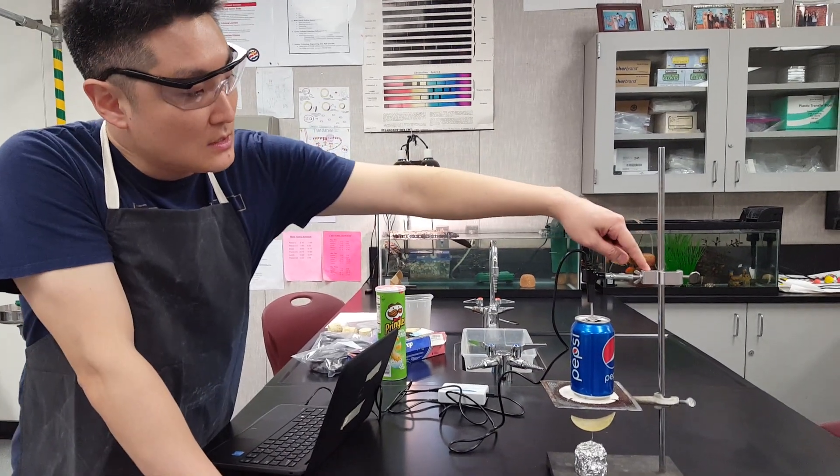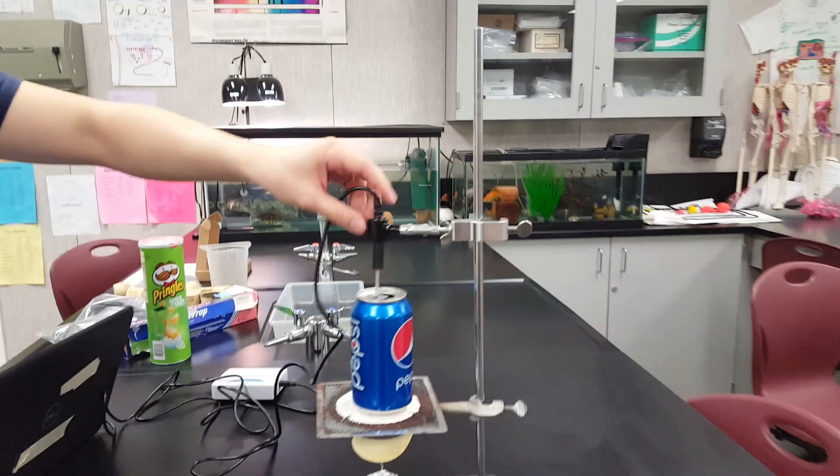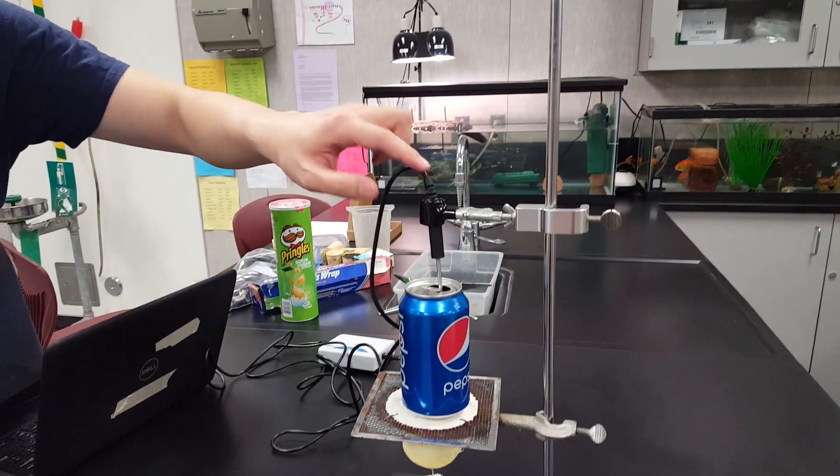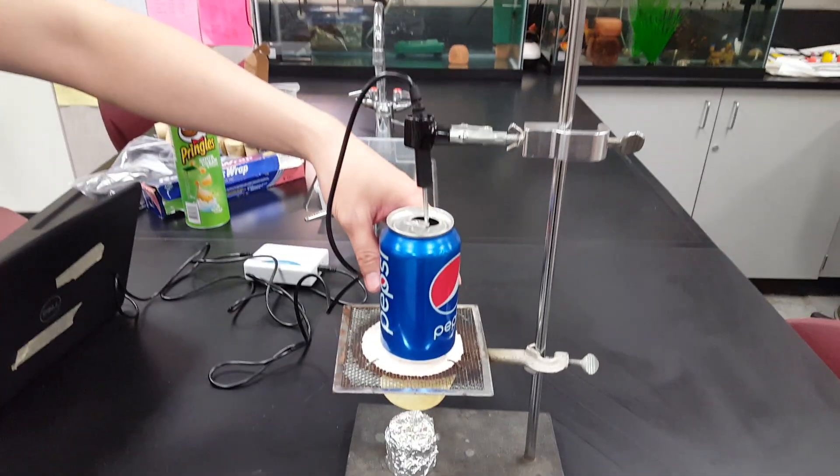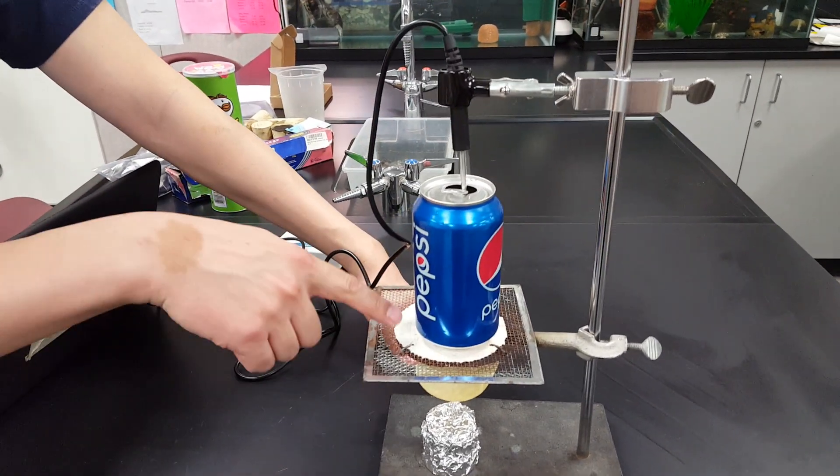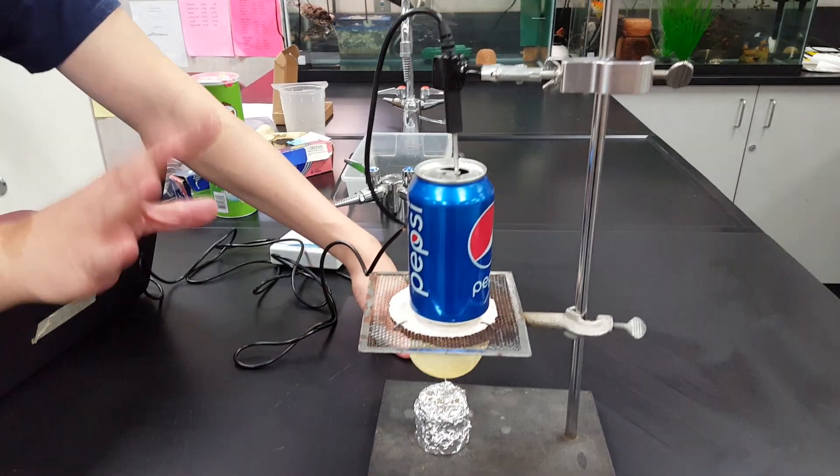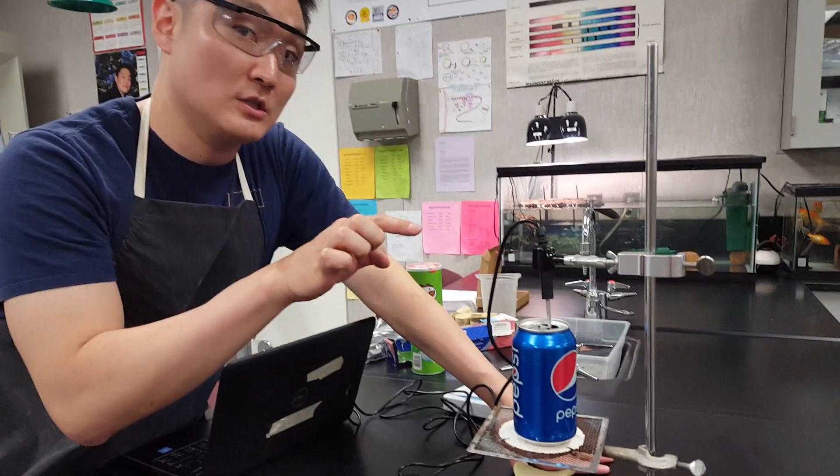And you want to set this up. This is the test tube clamp which is holding our temperature probe. And for the temperature probe, you want to make sure it's inside the can, not touching anything metal. So you want to make sure the probe itself is not actually touching the bottom of the can because then it will get too hot. What you want to do is make sure the probe is only touching the water.